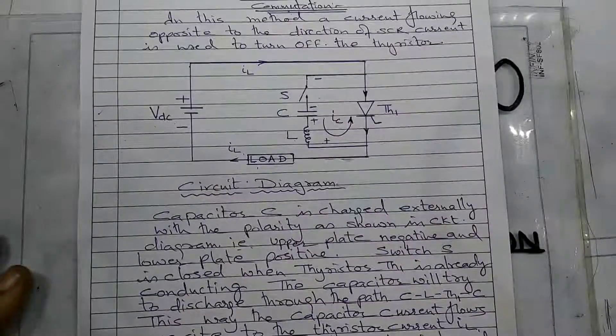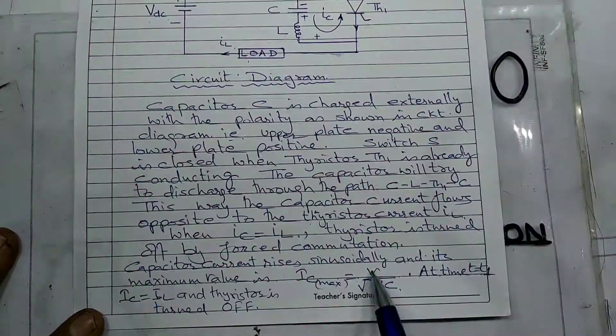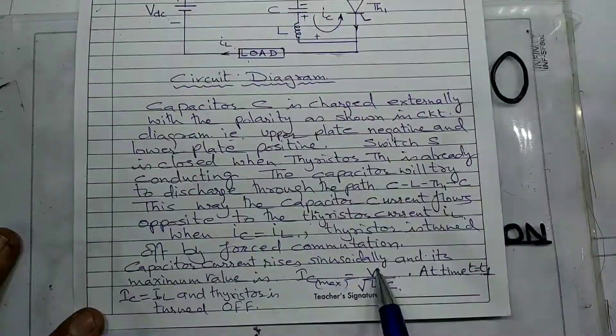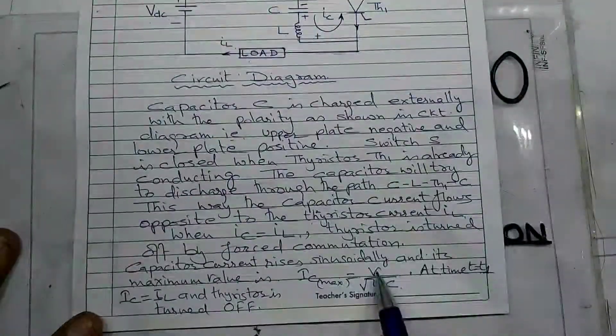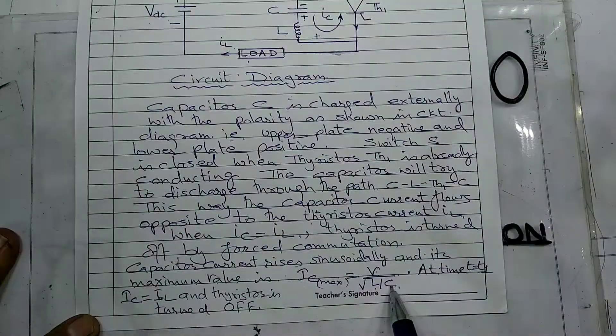The maximum value of IC is given by IC max equal to V upon square root LC, where V is the voltage, L is inductance, and C is capacitance.